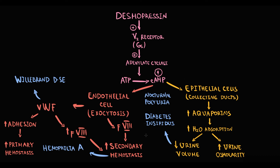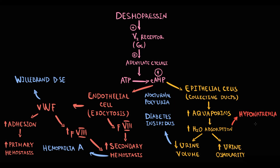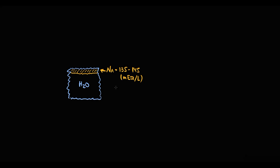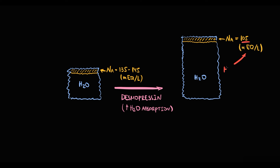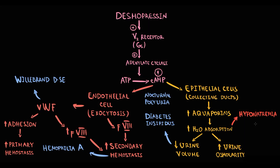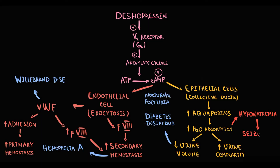The major adverse effect of desmopressin is hyponatremia. The reason hyponatremia develops is that with increased water absorption, the amount of fluid in the blood increases, but simultaneously the concentration of ions such as sodium decreases, so at some point relative hyponatremia develops. Hyponatremia can be very dangerous because it can precipitate seizures, and severe seizures can even cause death.